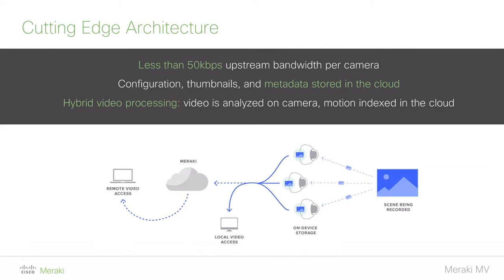What actually comprises that 50 kilobits per second, if not video? We store some configuration data, thumbnails, and metadata in the cloud for easier access. That allows us to employ a hybrid video processing technique that's quite unique. Our cameras all have processors on board, so video is analyzed on the camera itself. We then take the data resulting from that on-board processing and store it in the cloud — we motion-index in the cloud, and you'll see in the demo how that translates to really rapid results from the dashboard.